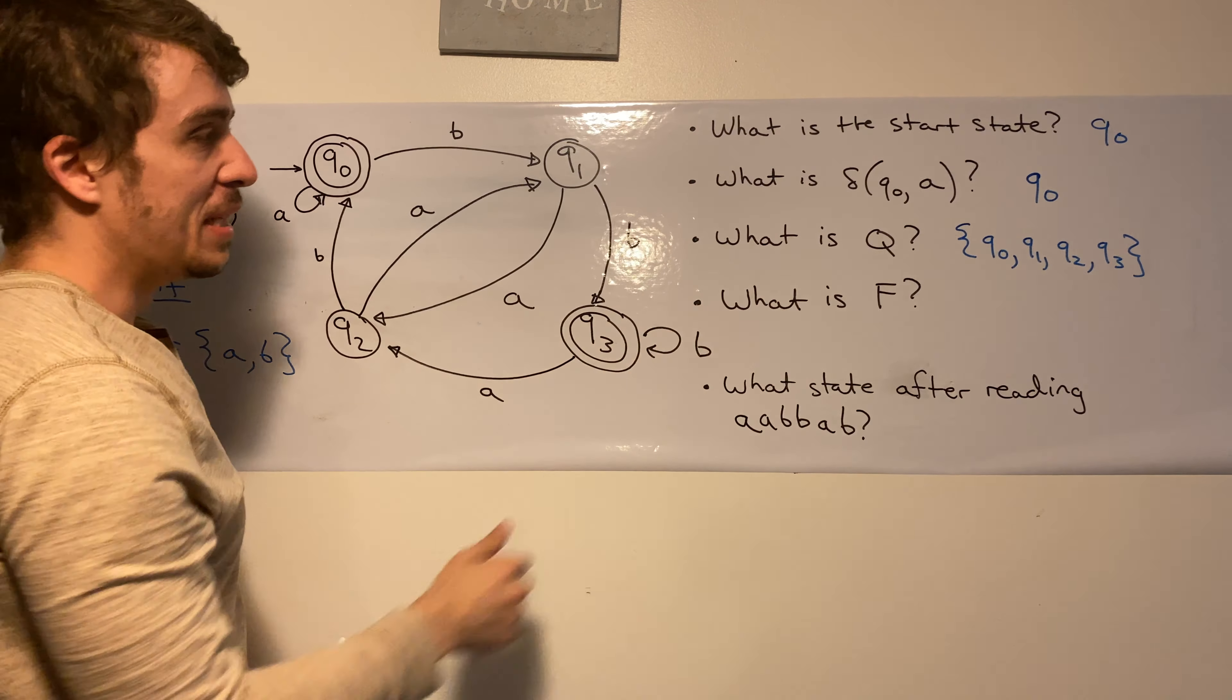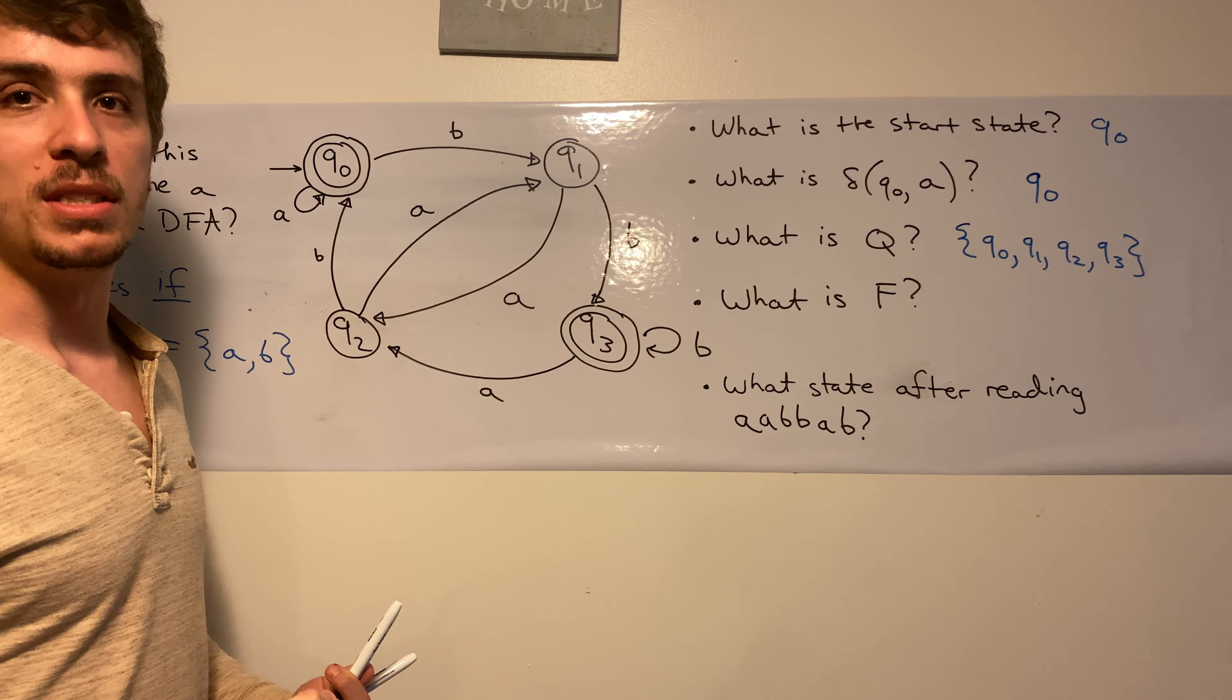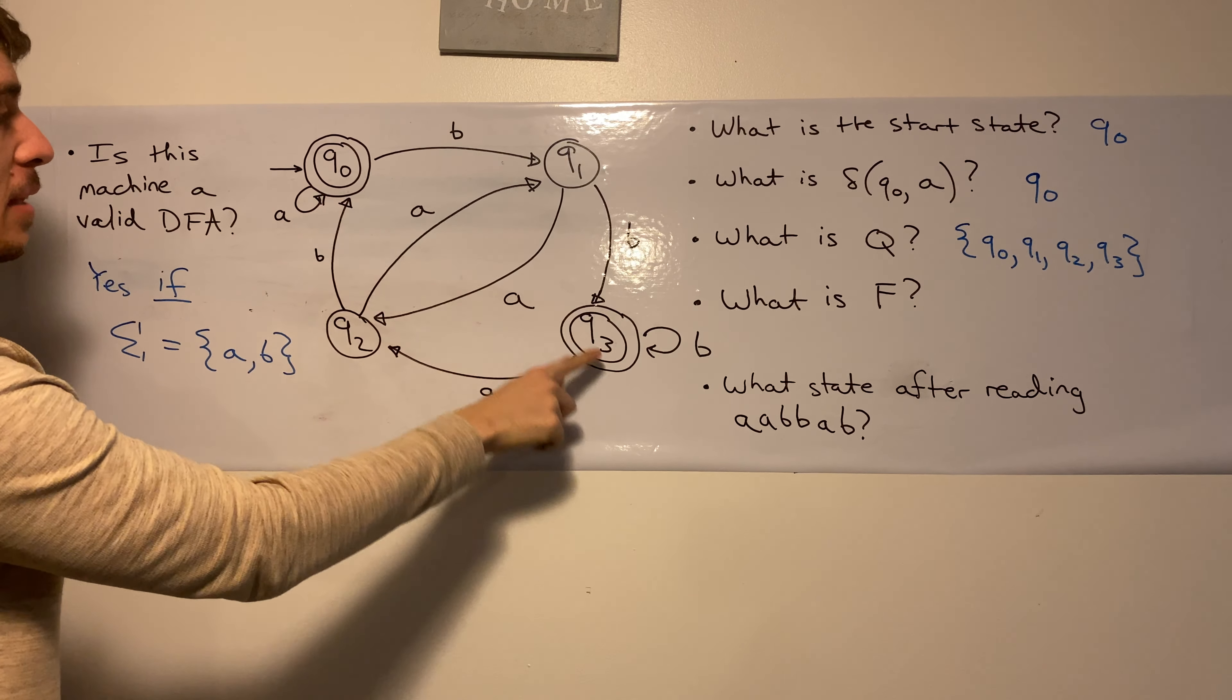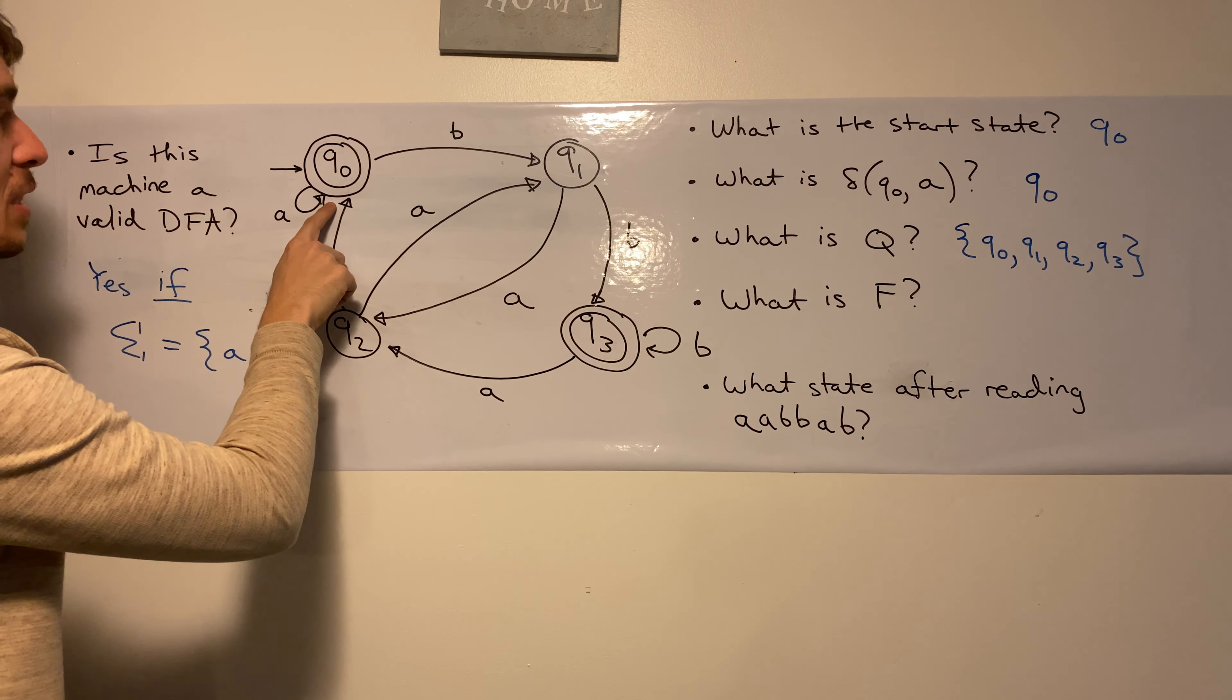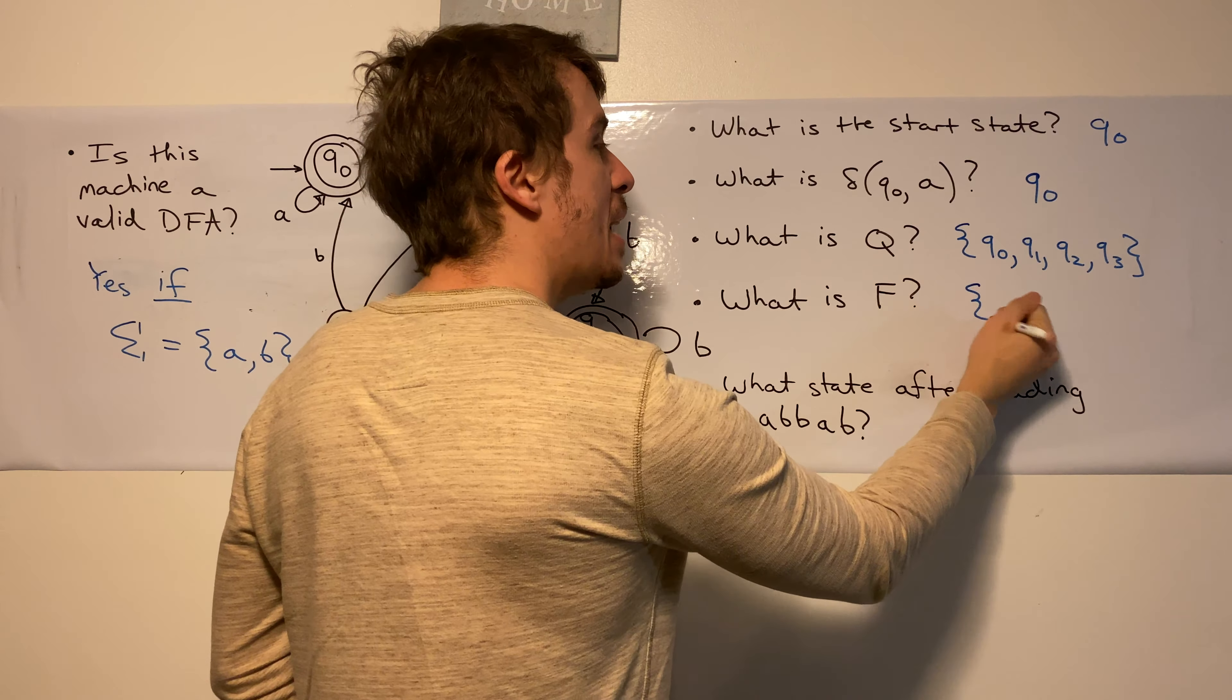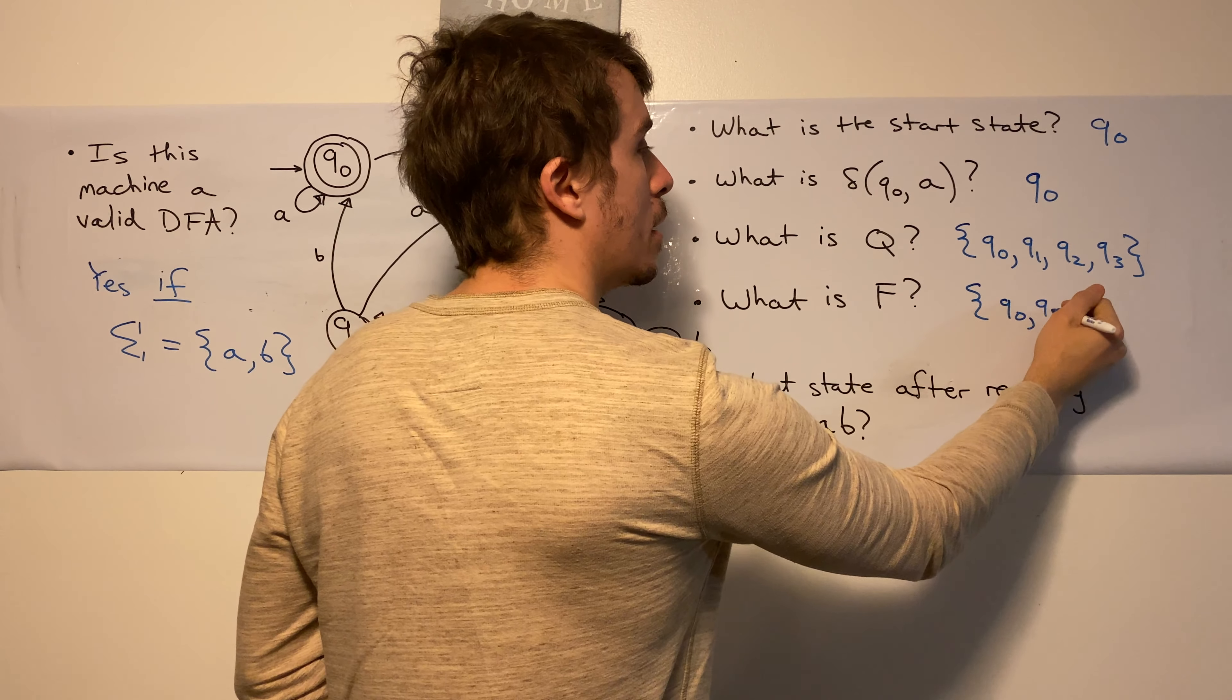And what is F? F, remember, is the set of final states. So which guys are final states here? It's all of the states that have a double circle, which in this case is Q0 and Q3. So we can confidently say that F is the set containing Q0 and Q3.